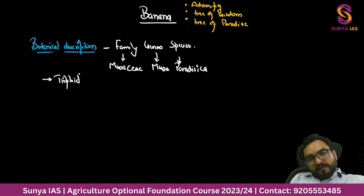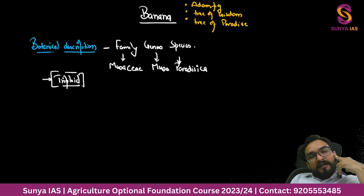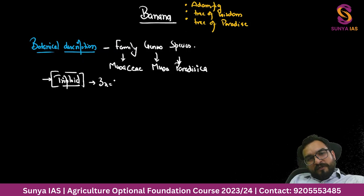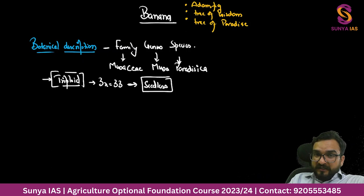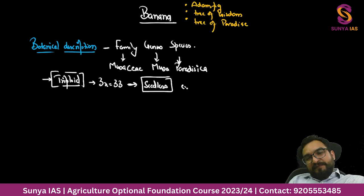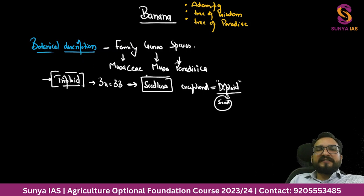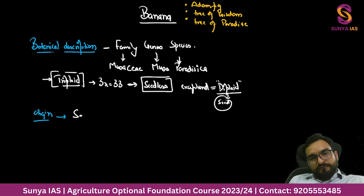Banana is basically triploid - it has 3x chromosomes, which is explained in plant genetics and plant breeding. That is why bananas are seedless. The wild species have seeds, but not the regular bananas we eat. Where you find seeds in banana, it is because those are of diploid nature - seed formation happens due to the diploid nature. The origin of banana is basically Southeast Asia.